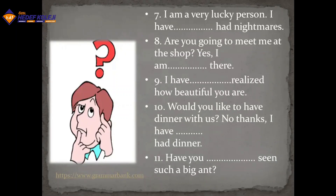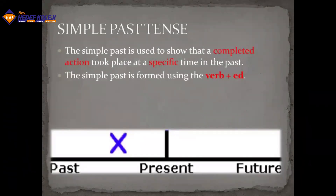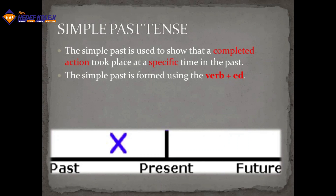Now let's start simple past tense. Simple past tense is used to show that a completed action took place at a specific time in the past. I underline 'specific' because it's the difference between simple past and present perfect tense — don't forget it is about a specific time. Simple past is formed using verb plus '-ed' for regular ones, and the second form of the verb for irregular ones.